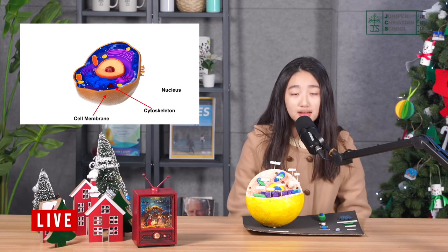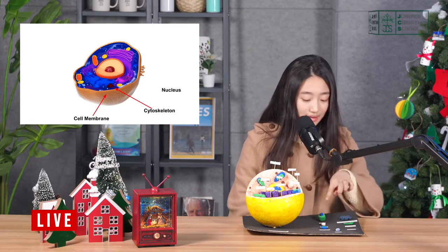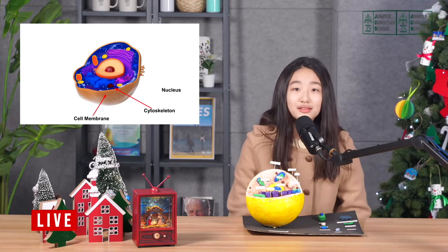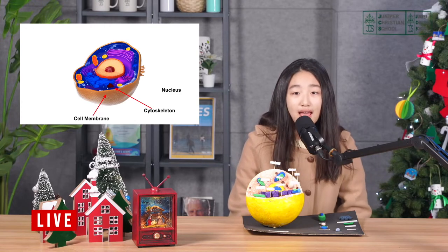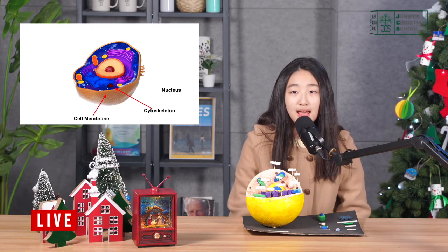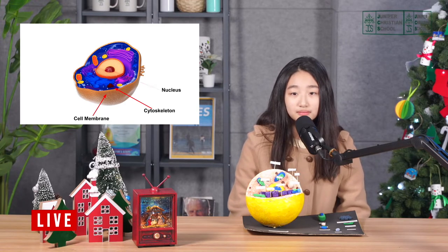Third is nucleus. Nucleus is this blue thing in this cell model and nucleus is the brain of the cell and gives structure to the cell.